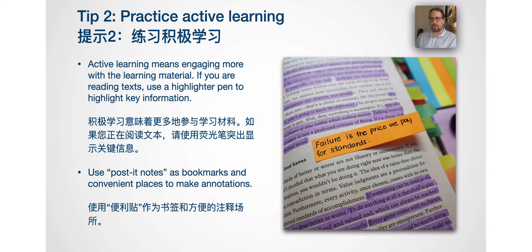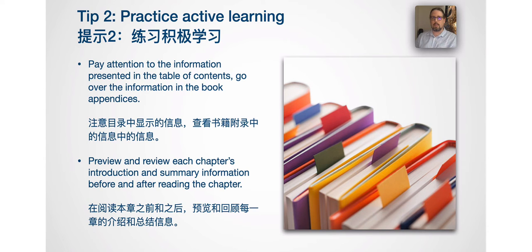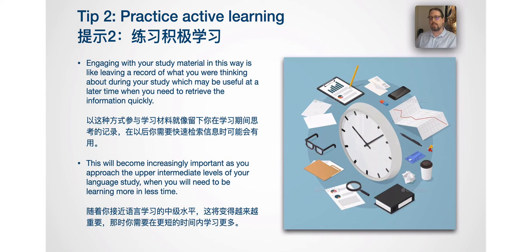Tip 2: Practice Active Learning. Active learning means engaging more with the learning material. If you are reading texts, use a highlighter pen to highlight key information. Use post-it notes as bookmarks and convenient places to make annotations. Pay attention to the information presented in the table of contents and go over the information in the book appendices. Preview and review each chapter's introduction and summary, both before and after reading the chapter. Engaging with your study material in this way leaves a record of your thinking, useful when you need to retrieve information quickly, especially at upper intermediate levels when you need to be learning more in less time.